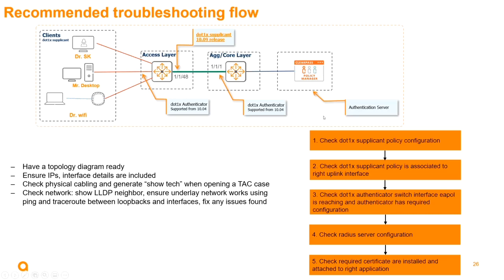On the dot1x authenticator, you must enable mirroring to check whether EAPOL packets are reaching the dot1x authenticator port before going to the AAA server. Until you get the EAP identity, it will not be able to send the RADIUS access request to the AAA server, so make sure EAPOL is reaching the authenticator port.